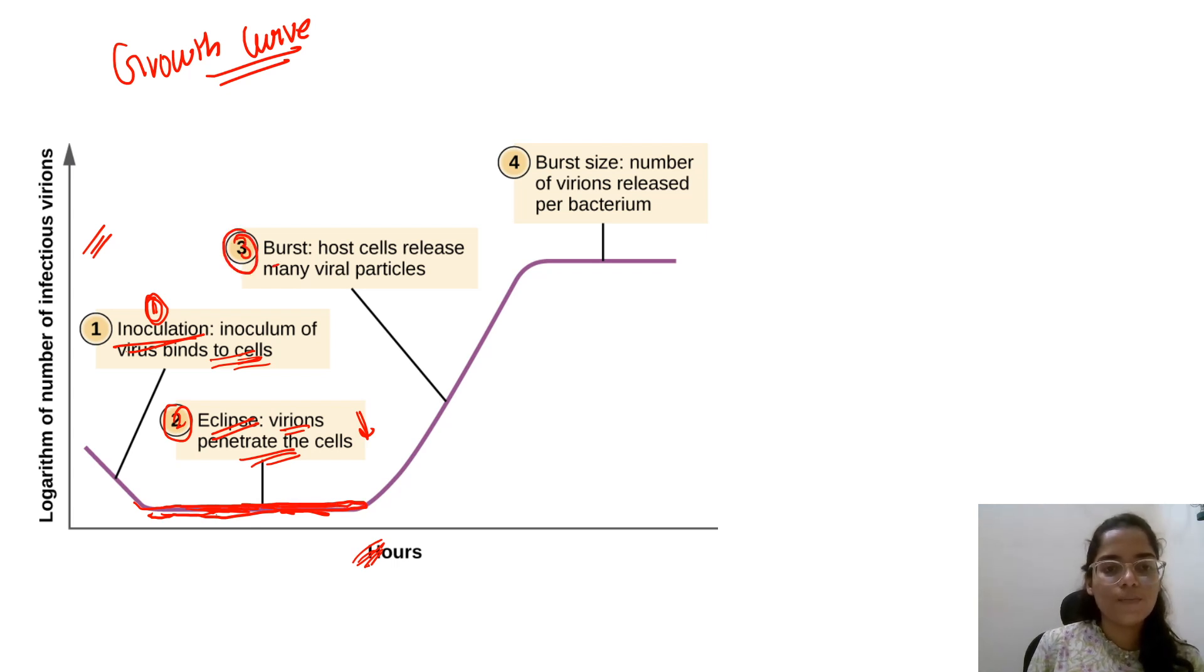Then the third stage is where viruses have done all their integration and everything, and now it is released. This means we can see a steady growth or a steady increase in the growth curve. So here our virus is bursting. And this is the burst size. What is the definition of burst size? It is the number of virions released per bacterium.